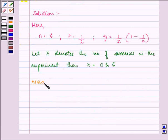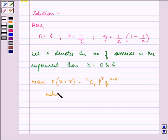Now, we know that we will find the probability that x is equal to r by using this formula: n choose r, p raised to the power r, q raised to the power n minus r, where r is greater than or equal to zero but less than or equal to six.